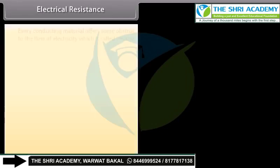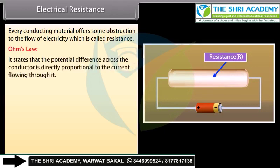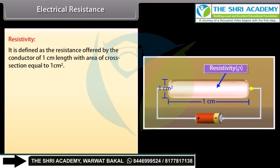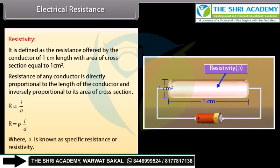Electrical Resistance: Every conducting material offers some obstruction to the flow of electricity, called resistance. Ohm's Law states that the potential difference across a conductor is directly proportional to the current flowing through it: V = IR, or V/I = R. The ratio of potential difference to current is constant and is called resistance; its unit is ohm. Resistivity is defined as the resistance offered by a conductor of 1 cm length with area of cross-section equal to 1 cm². Resistance R = ρL/A, where ρ is specific resistance or resistivity.